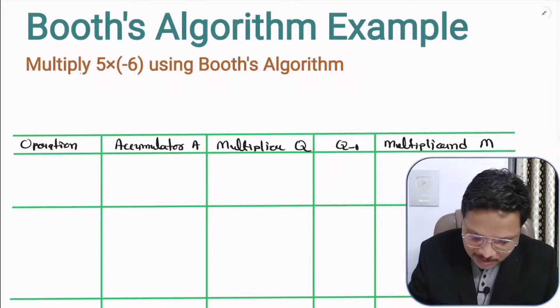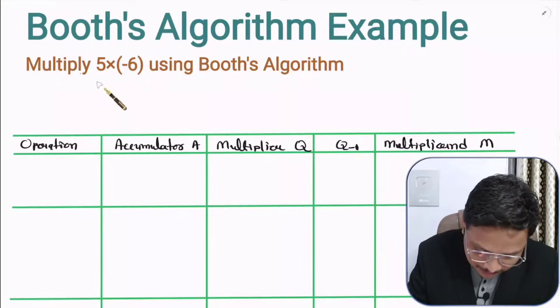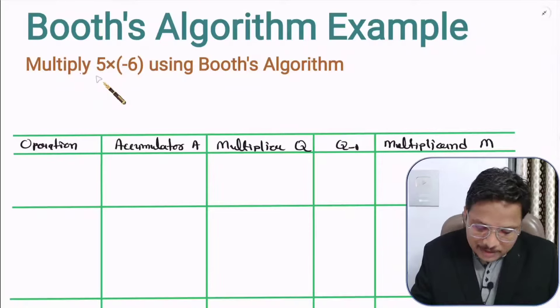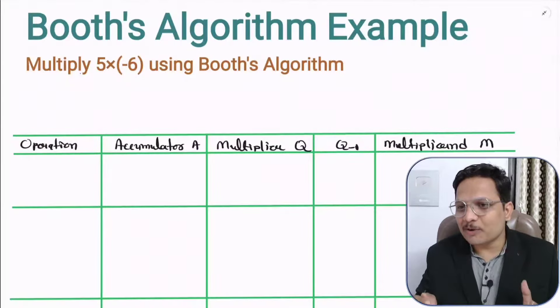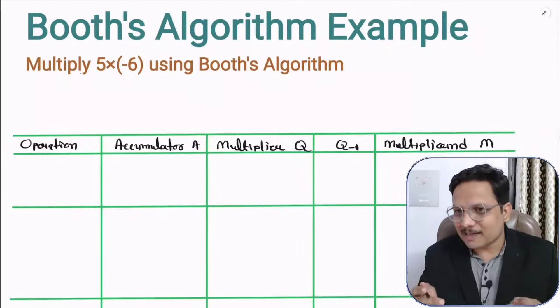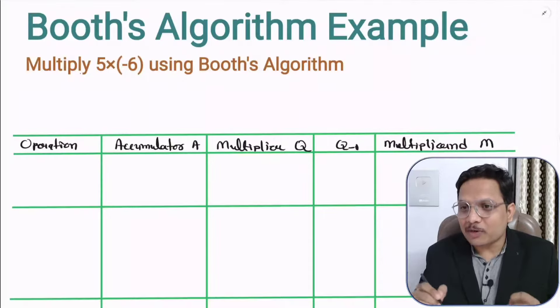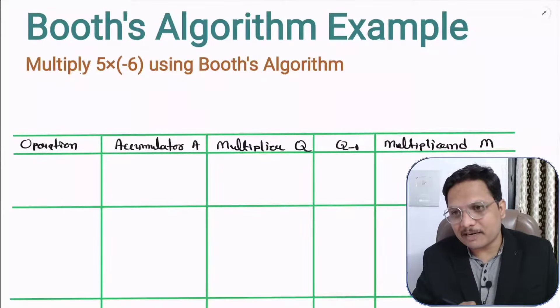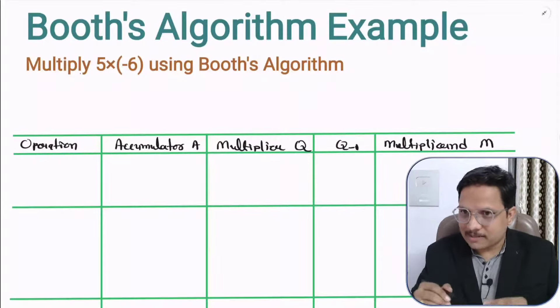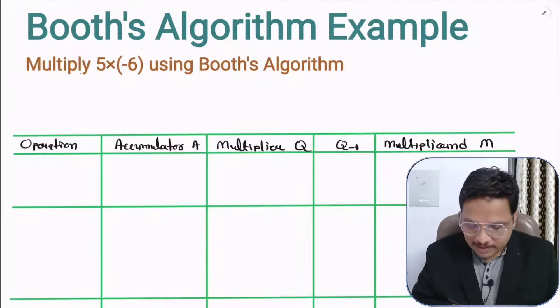So if you observe your problem statement, that is to multiply 5 into minus 6. Obviously, we know that is minus 30. But we need to understand how exactly the computer does this multiplication step by step.